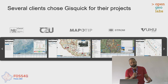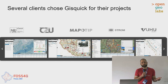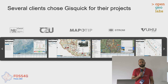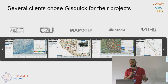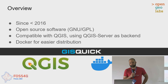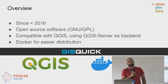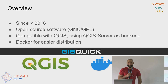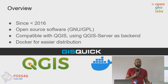GisQuick is already used by several applications and users — universities as well as commercial companies providing various services in agriculture as well as urban planning areas. It's not new; it started even before 2016. It's completely open source software released under GNU GPL, so we are looking forward to more contributions. Of course, it's compatible with QGIS desktop because it uses QGIS server as the back-end, and for easiest distribution and installation we provide Docker images and all the Docker infrastructure.